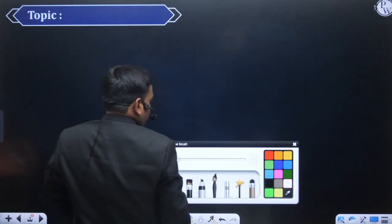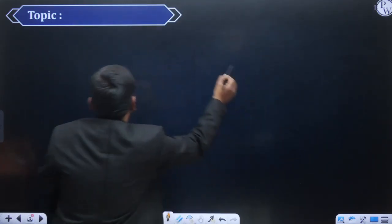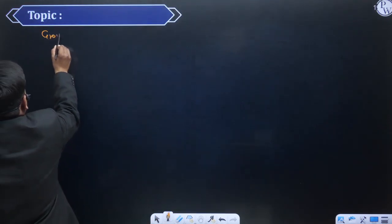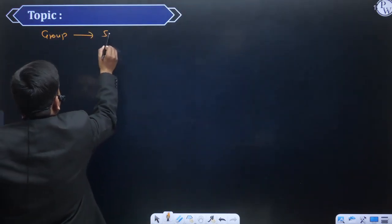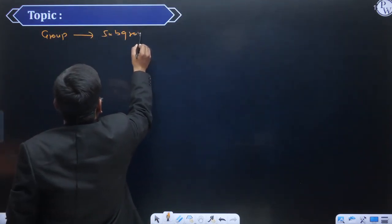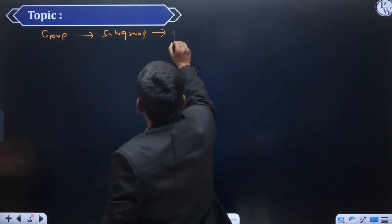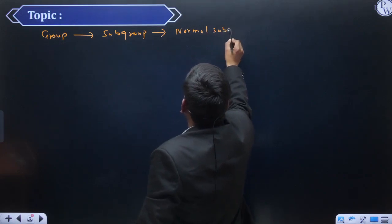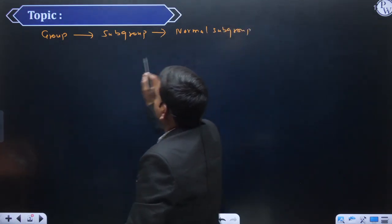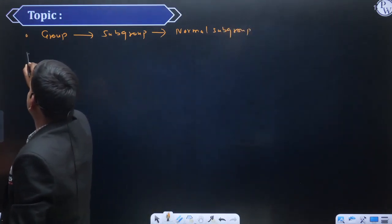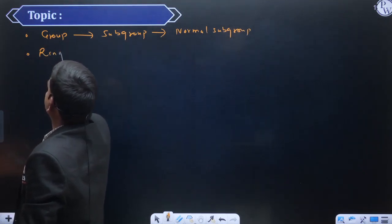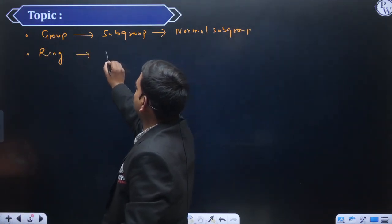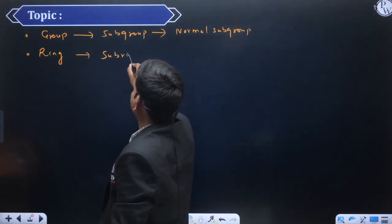So jab aap subring ki baat karte hain, jaisa ki humne group mein padha tha — pehle group tha, phir humne subgroup padha, phir humne normal subgroup padha. Aise hi yahan par jab hum padhte hain to hamara way to study the structure is: ring hai, phir subring hai.